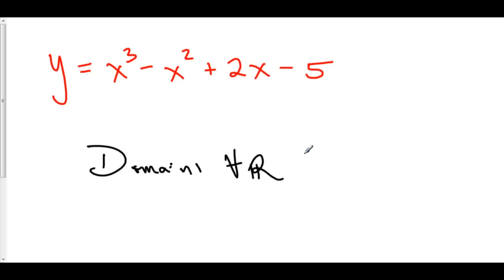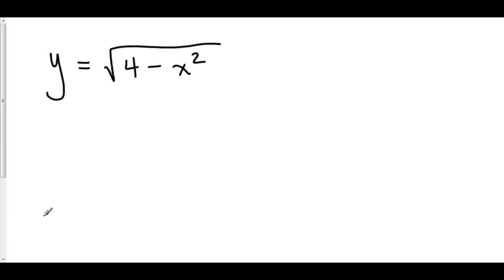Because there's no restriction for what you can plug in. However, consider this function right here. If we want to have real solutions, what can't this square root be? Well, it turns out that the square root can't be negative. We can't have 4 minus x squared be negative. Which means that 4 minus x squared has to be greater than or equal to 0.